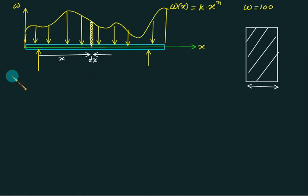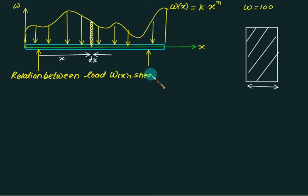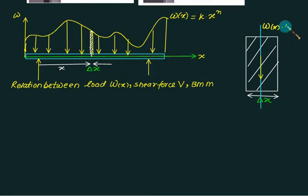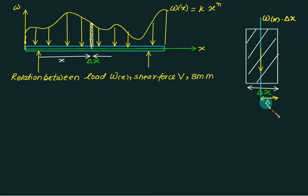Once we have the basic idea, we develop the relation between load, shear force, and bending moment. Load is represented by w(x), shear force by V, and bending moment by M. We continue with the element previously selected, now calling its thickness delta x. The total load acting on this element is w times delta x, passing through the center of the element at a distance of delta x over 2 from each edge.